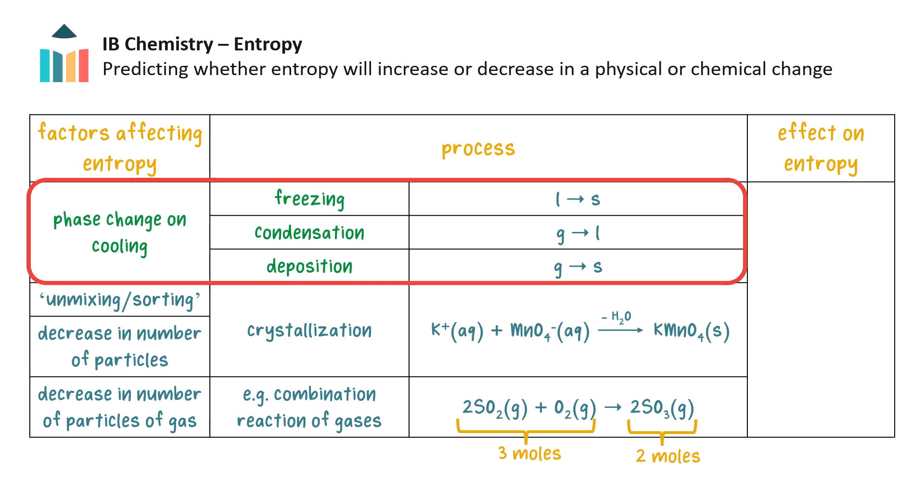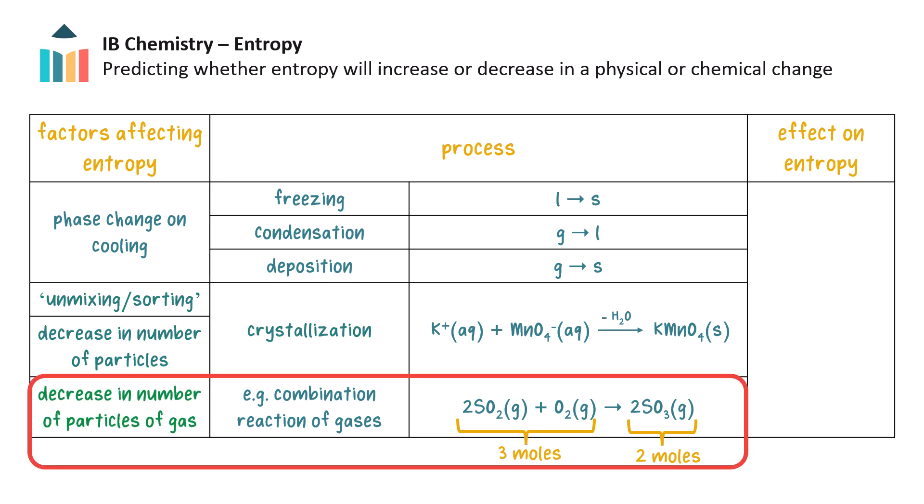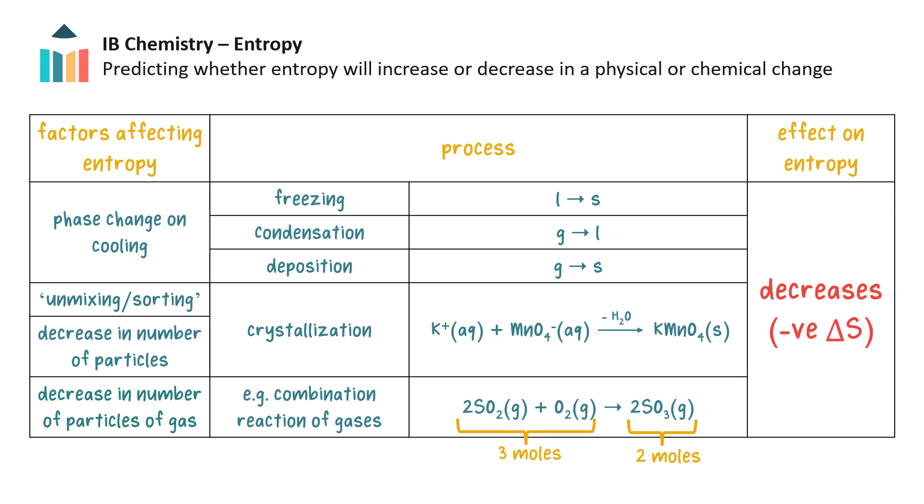The opposite or reverse processes which involve cooling, or a decrease in number of particles, for example by crystallization, and especially when there is a decrease in the number of particles of gas, all have an entropy decrease. The change in entropy is negative, as the system becomes more ordered.